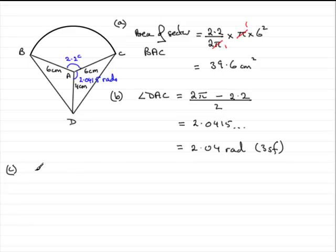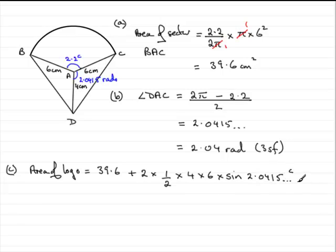So we've got everything we need to get the total area. I'm just going to go straight in and say that the area of the logo equals the area of the sector, which is 39.6, and then we've got plus two times the area of these triangles, ACD and ABD. They're both the same, so that would be half the product of the two sides, so that would be 4 times 6 times the sine of the included angle, and the included angle is 2.0415 and so on radians. I'll put a little C there for radians.